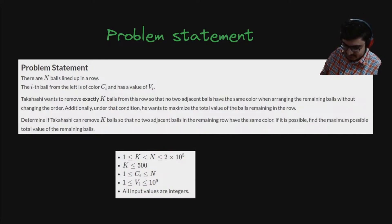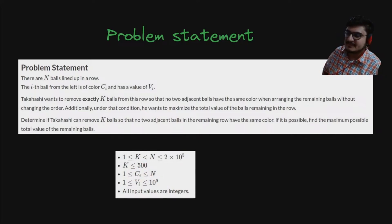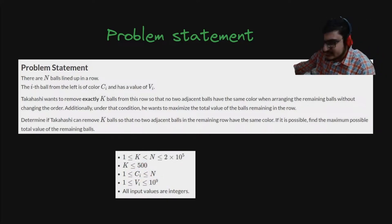We have constraints: K ≤ 500, all colors are between 1 to N, all values are between 1 to 1e9, and all input values are integers.